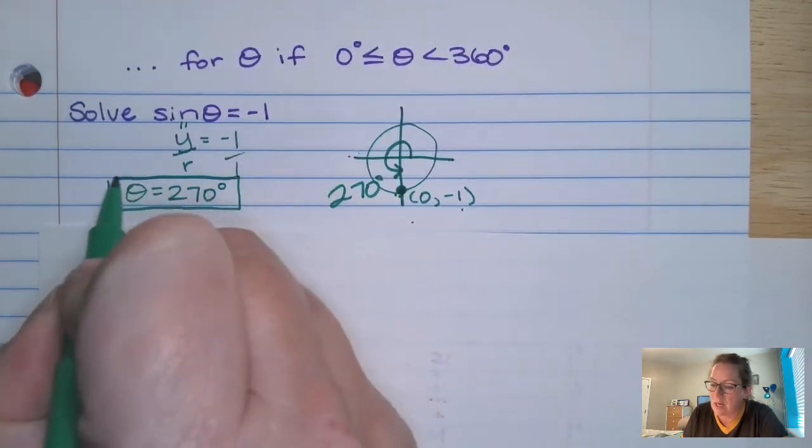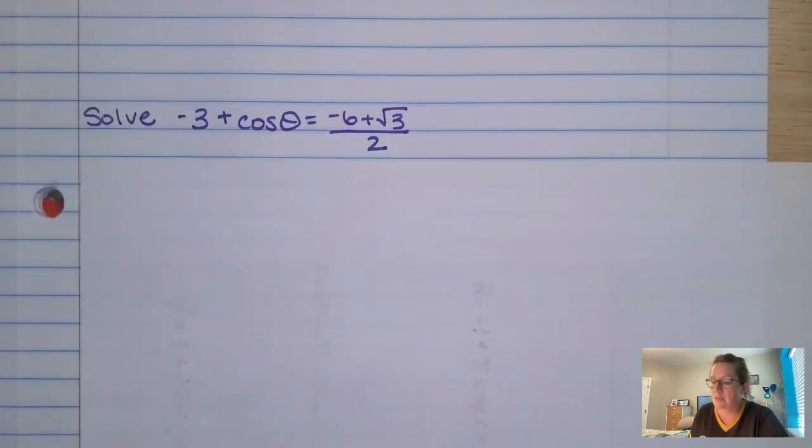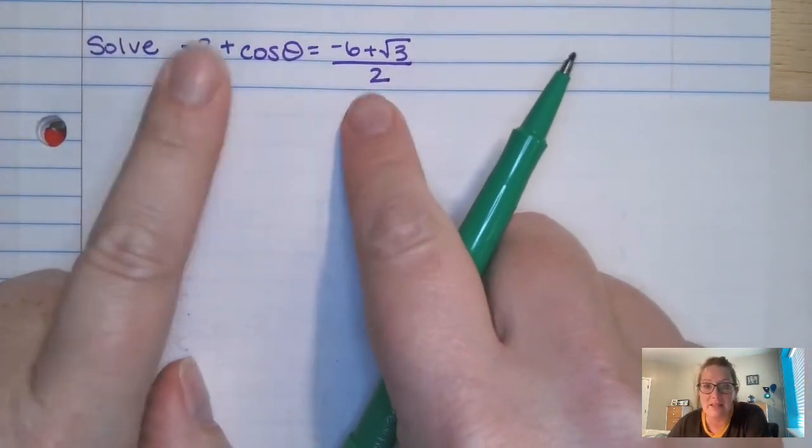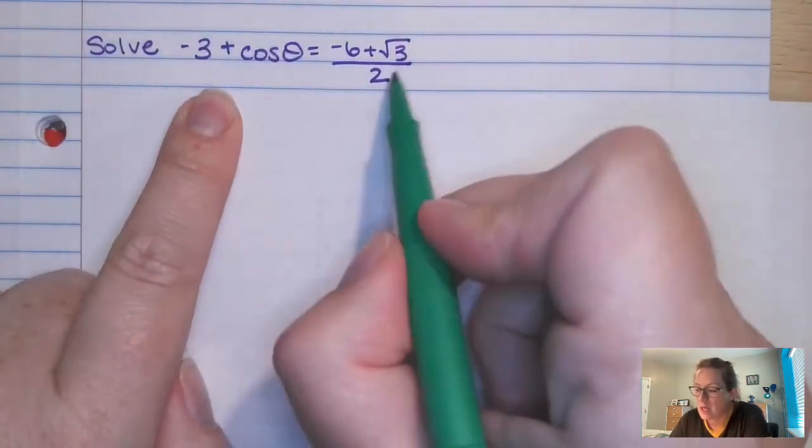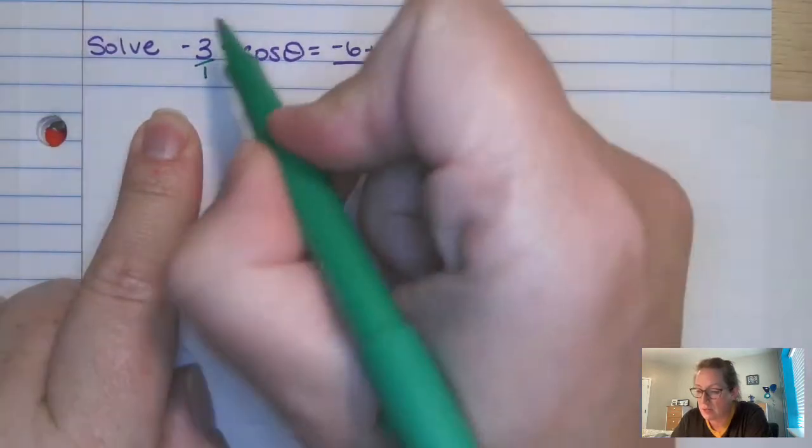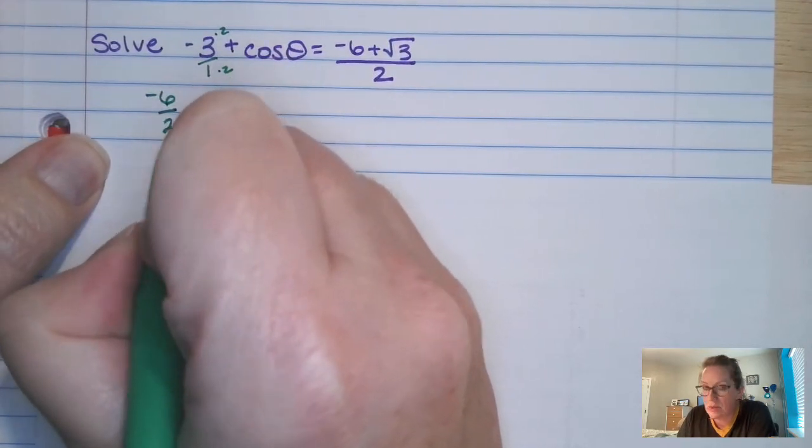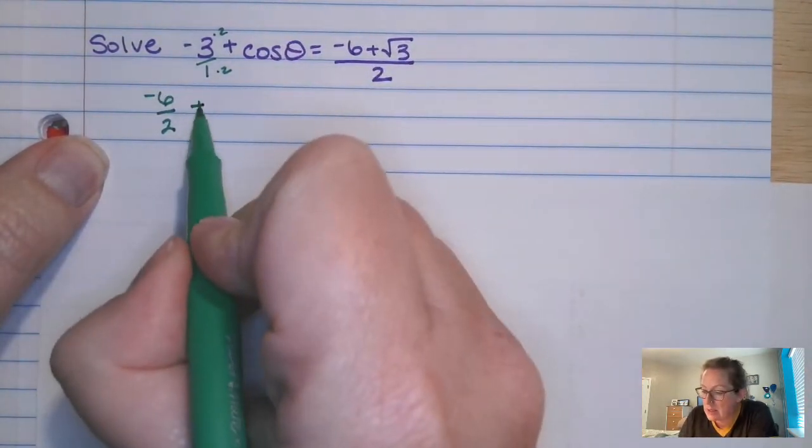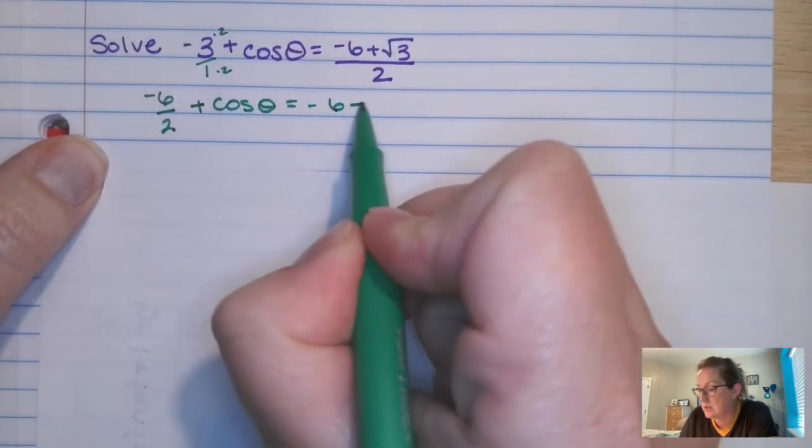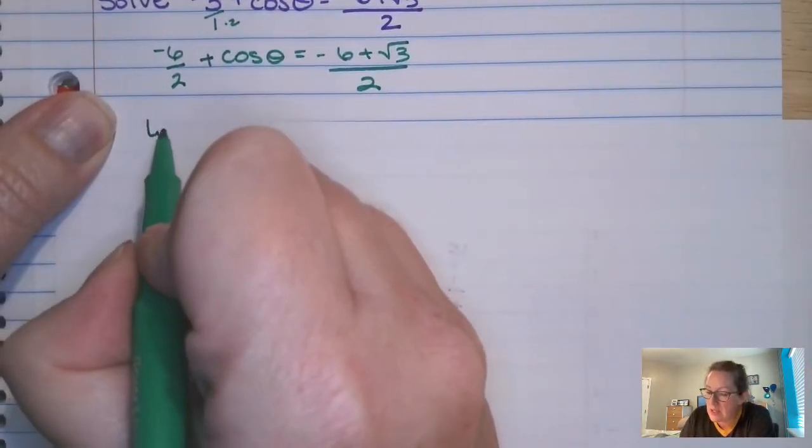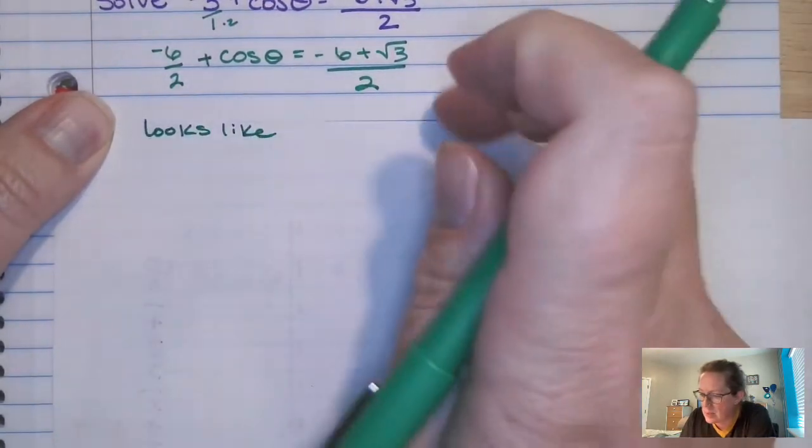All right, now look at this one. If this one doesn't look scary, and you don't think that you're going to be amazing when you figure this one out, man, you've got to give yourself some credit. All right, we've got a denominator. So let's get this thing to have a common denominator. If I wanted this thing to have a common denominator of 2, I'd multiply by 2 and 2. So I'm going to get negative 6 over 2 plus cos theta equals negative 6 plus root 3 over 2.